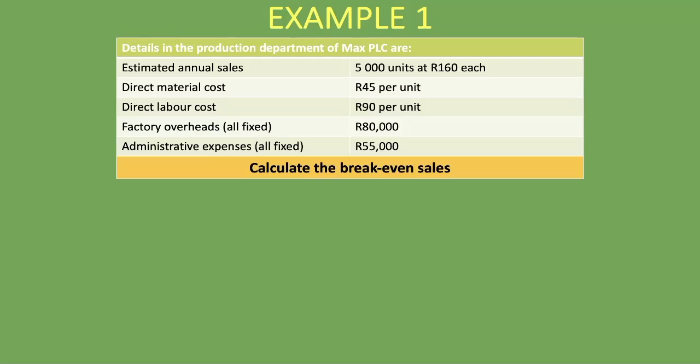Let's look at an example and calculate the break-even sales. We are given estimated annual sales of 5,000 units at R160 each, a direct material cost of R45 per unit, and a direct labor cost of R90 per unit. Direct material and direct labor together make up the variable cost. We also have factory overheads, which are all fixed at R80,000, and administrative expenses, also all fixed at R55,000 — these form part of your fixed costs.